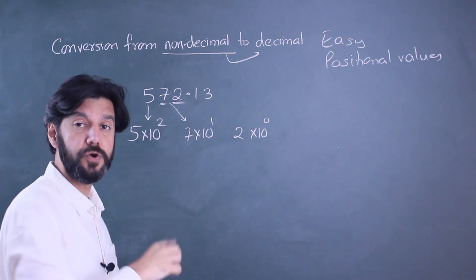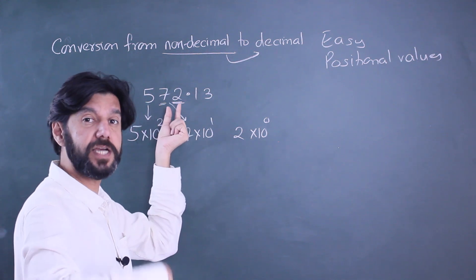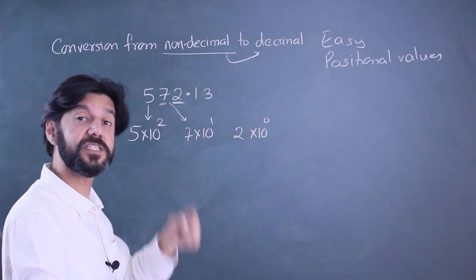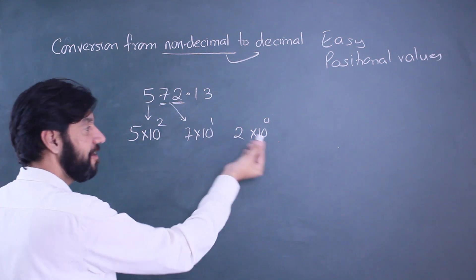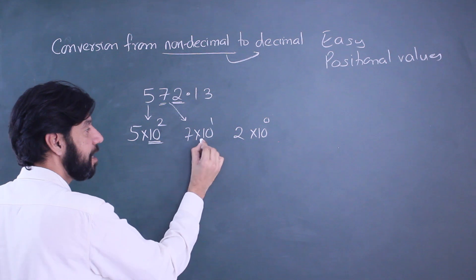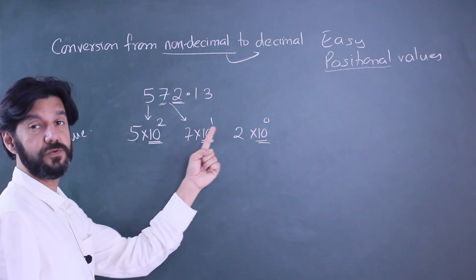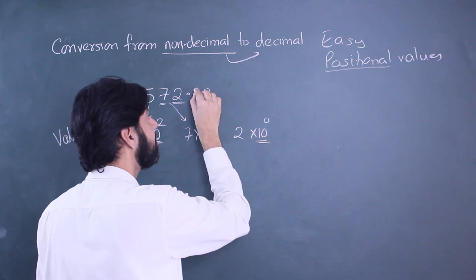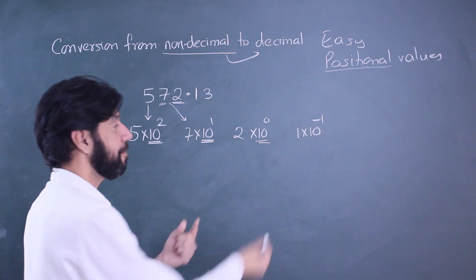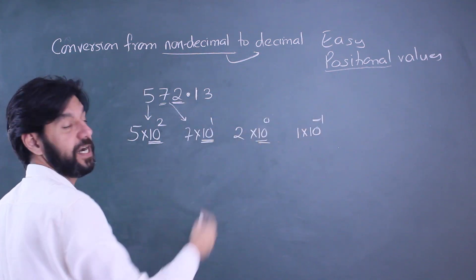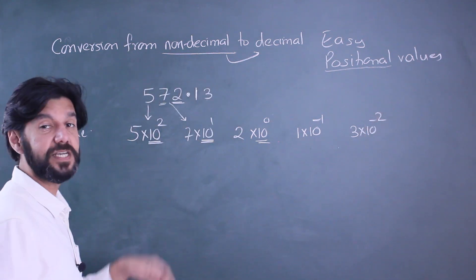The tens place means you have counted from zero to nine once already, and the hundreds place means you've gone through zero to nine multiple rounds. Continuing this pattern — 10², 10¹, 10⁰ — we can also go into the decimal part. The digit 1 after the decimal point has a positional value of 10⁻¹, and the digit 3 has a positional value of 10⁻².